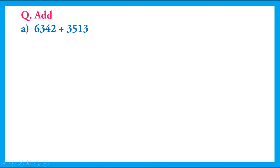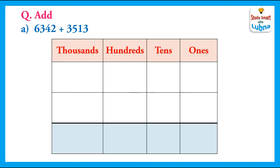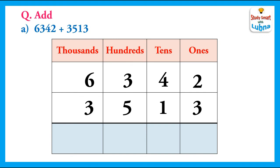Another question. In this question, we have to add 6342 and 3513. We will write these 4-digit numbers below their place values: 6342 and 3513. After this, we will add them. We will add the ones. 2 plus 3 equals 5. We write 5 in the ones column.